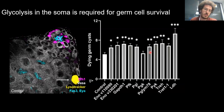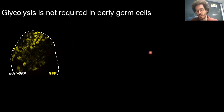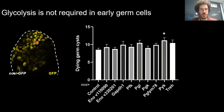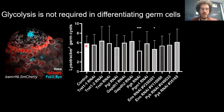In controls, approximately 20% of germ cysts die under physiological conditions. When we knocked down glycolytic enzymes specifically in the soma, we observed an increase in the number of dying germ cysts for the great majority of enzymes tested. To confirm the requirement is in somatic, not germ, cells, we knocked down glycolytic enzymes specifically in germ cells using two different drivers — an early driver near the niche and a later driver — and in both cases saw no significant increase in dying germ cysts.